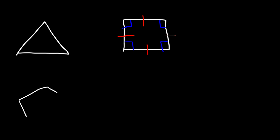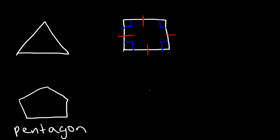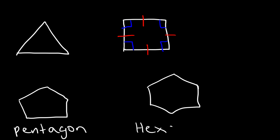A five-sided polygon is known as a pentagon. A polygon with six sides is known as a hexagon. A polygon with eight sides is known as an octagon.